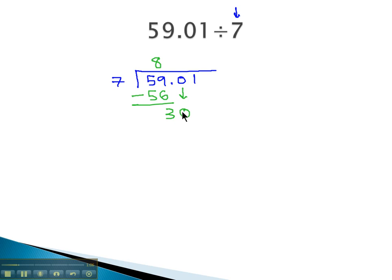7 goes into 30 four times. Notice, I put that 4 directly above the digit we're dividing into, because 4 times 7 is 28. Subtracting, we get 2, bring down the 1, and 7 goes into 21 three times, again, putting that digit directly above what I'm dividing into.